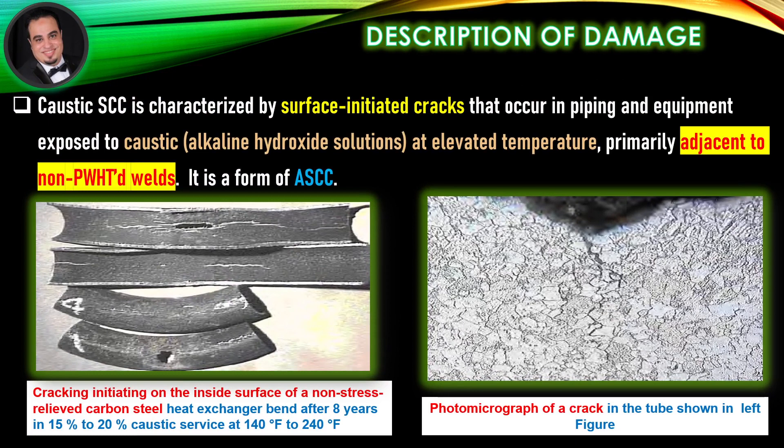Description of damage: Caustic stress corrosion cracking is characterized by surface-initiated cracks that occur in piping and equipment exposed to caustic, alkaline hydroxide solutions at elevated temperature, primarily adjacent to non-post-weld heat treatment welds. It is a form of alkaline stress corrosion cracking, as illustrated in figures.